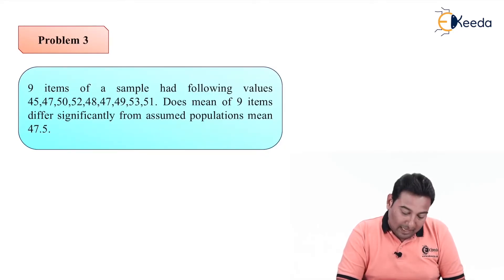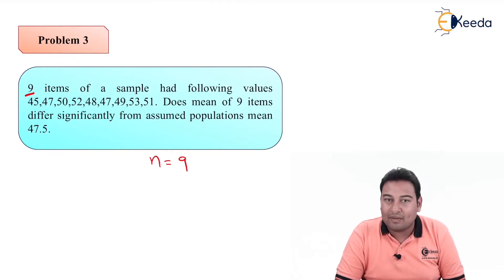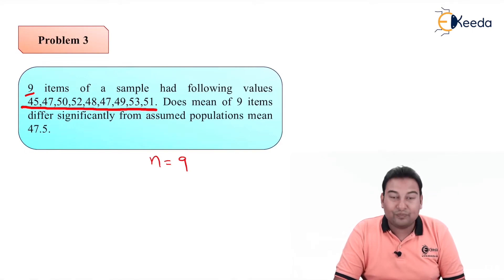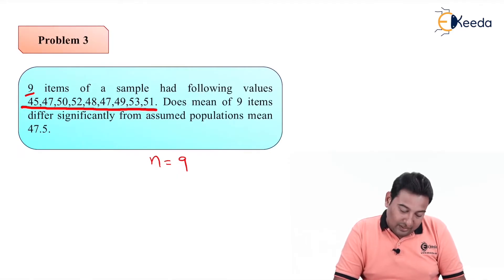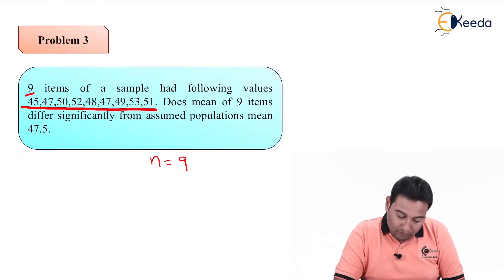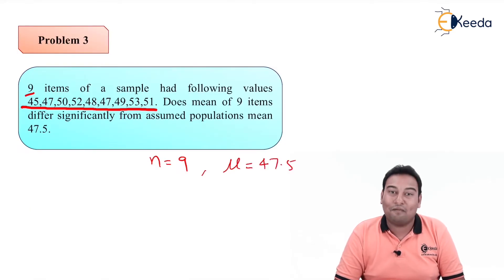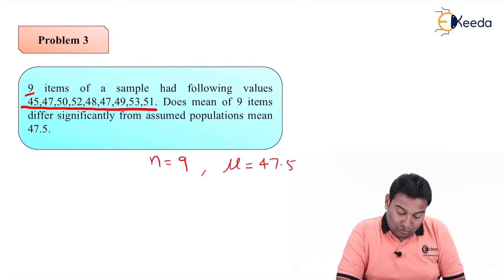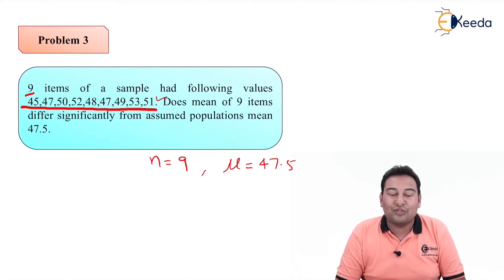Nine items of a sample had the following values — n is equal to 9, which is less than 30, so it's a small sample test. Their values are given. The question asks: does the mean of nine items differ significantly from the assumed population mean? Since nine items are given, this clearly belongs to type 1 of the small sample test for single mean.